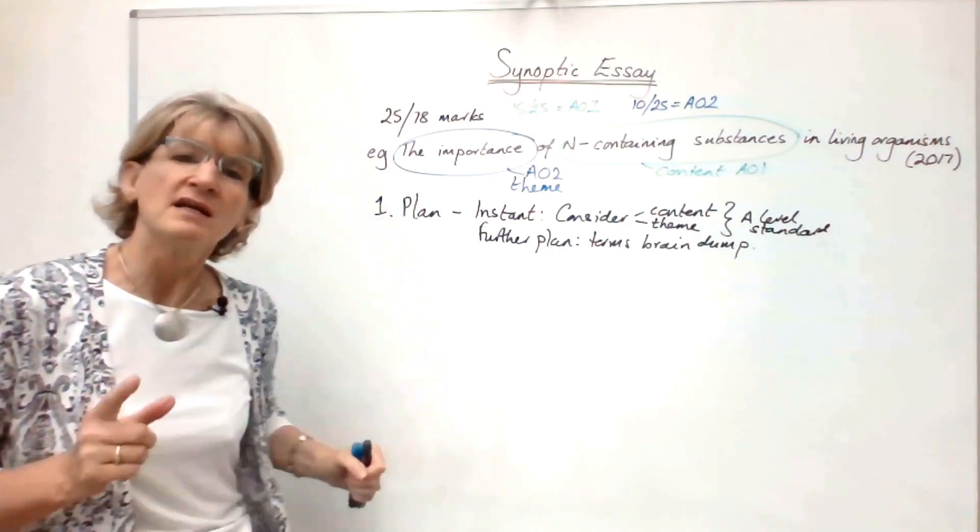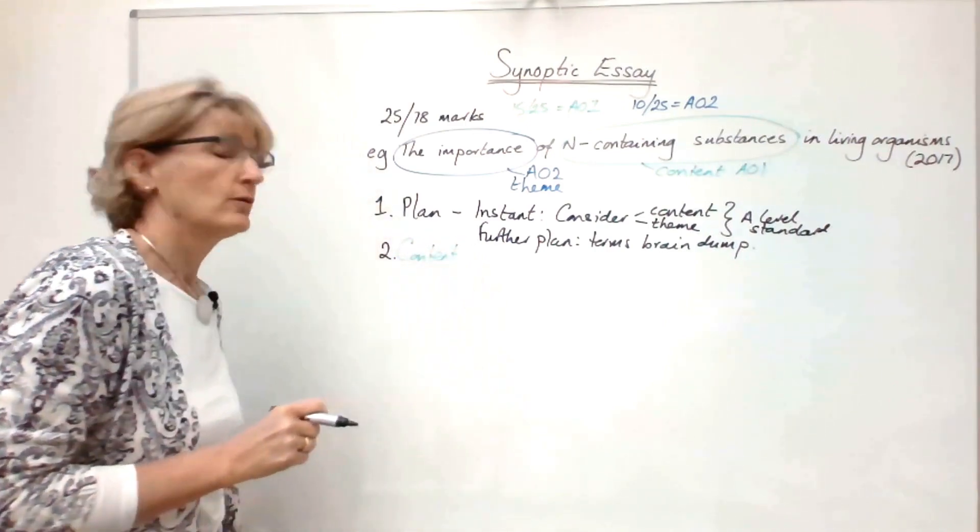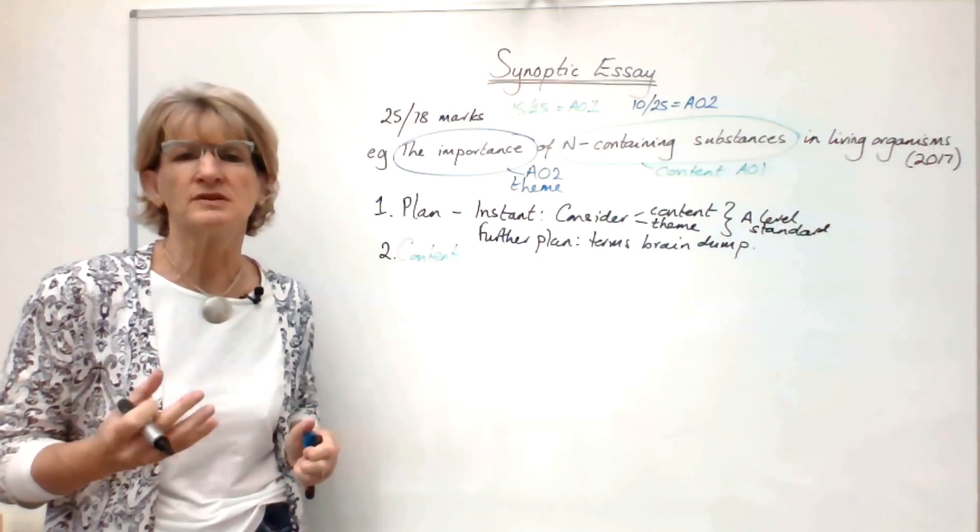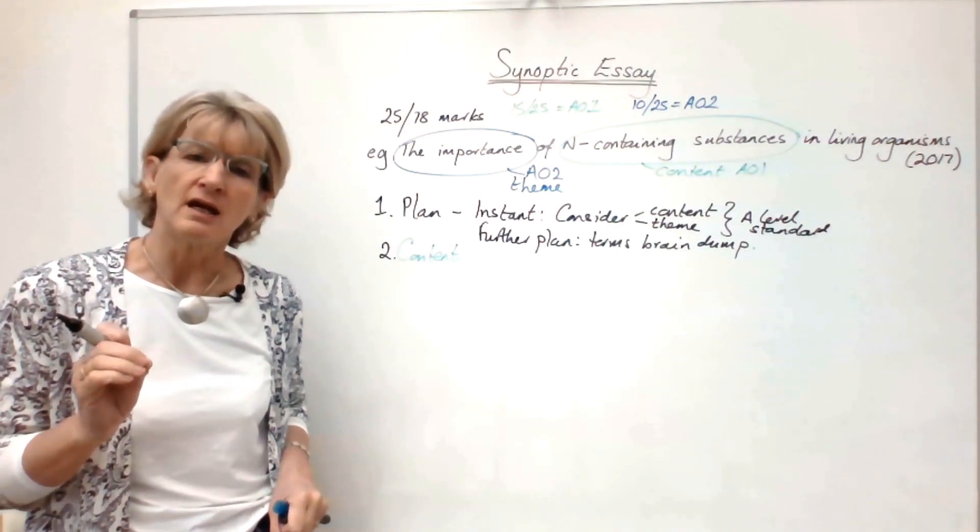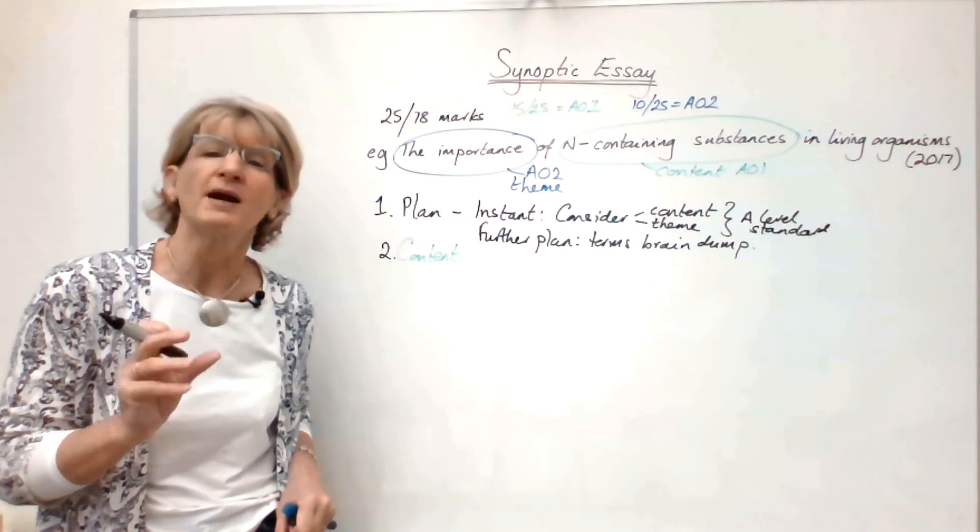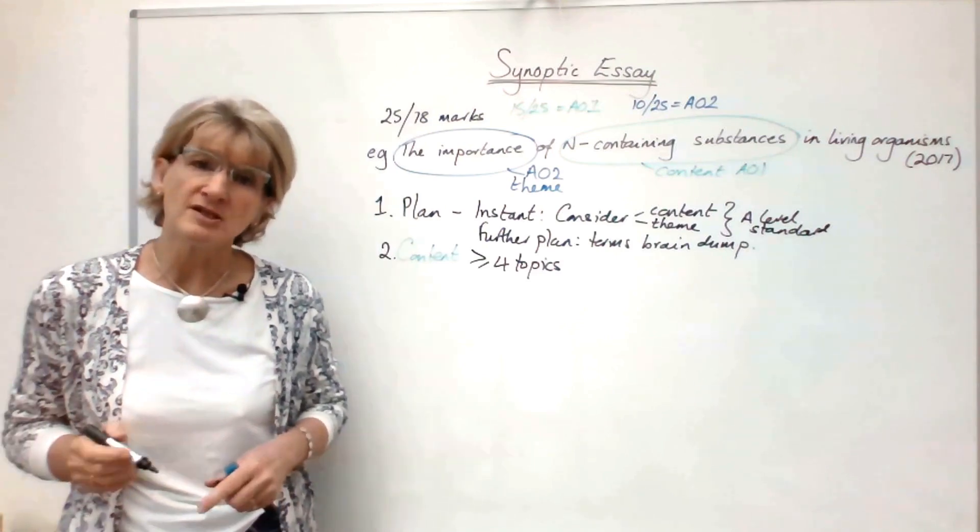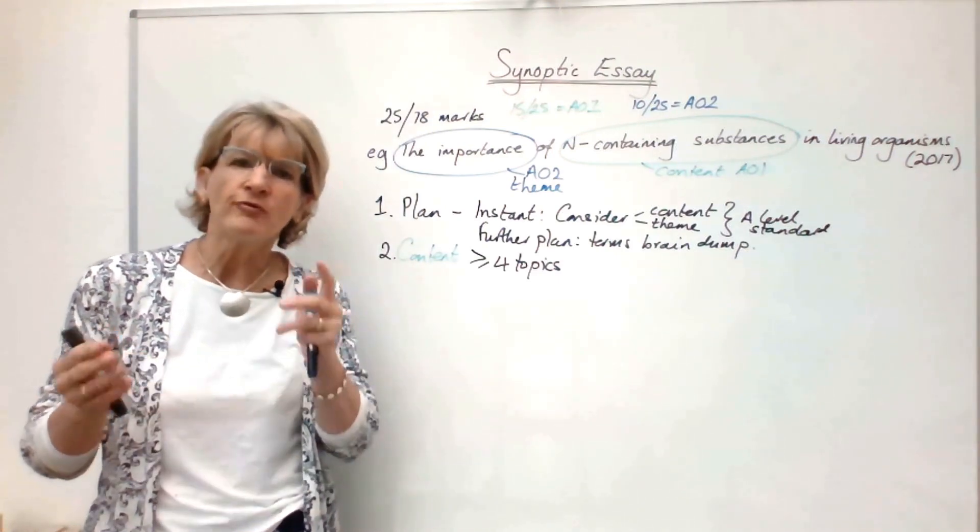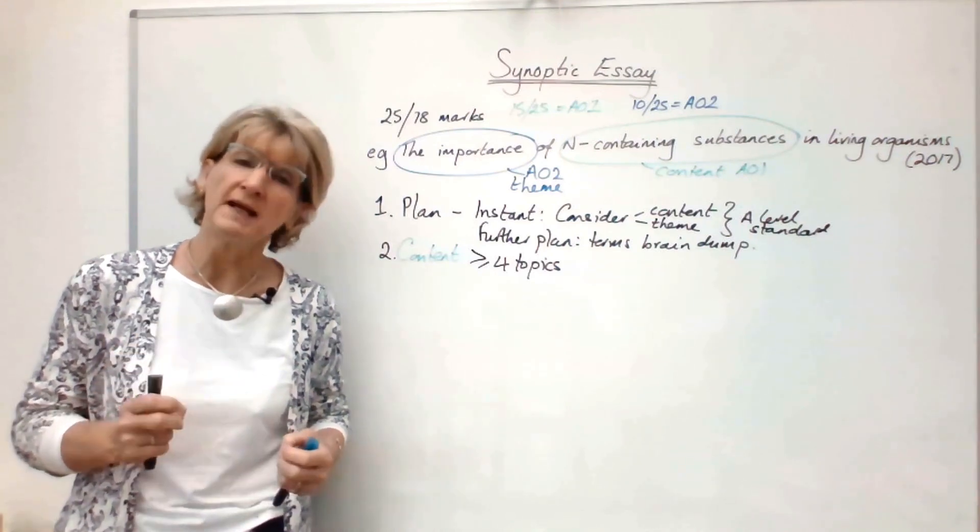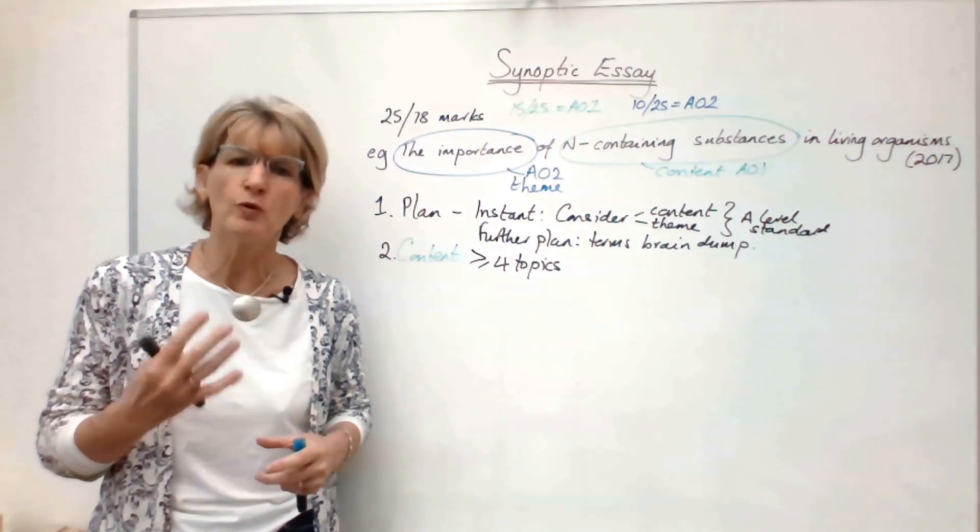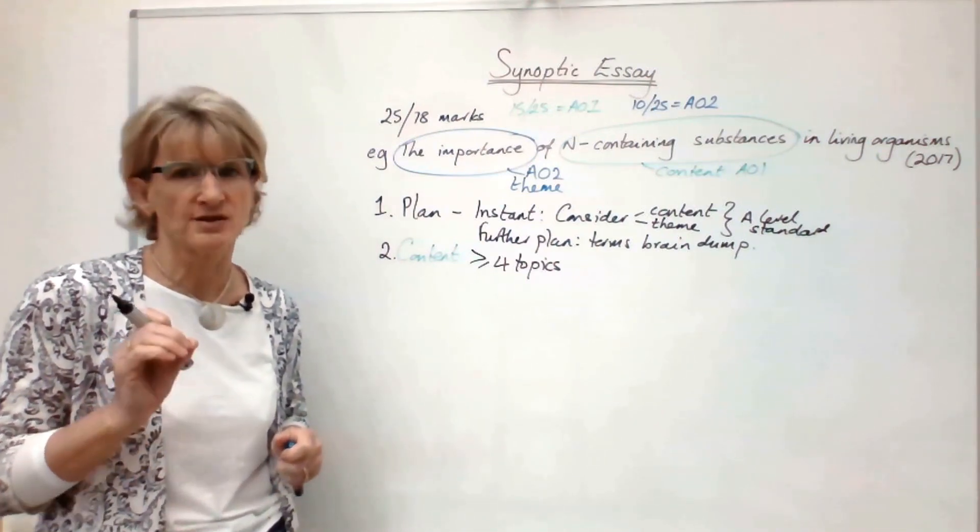The next tip is the content. What are you actually going to write? What examples or topics are you going to include in your content? The key thing here is that you have to allow enough time to write about at least four topics. Personally, I recommend you doing five, and I think that's probably a reasonable balance between the time that you've got and actually having a little bit of insurance because the examiners will pick the best four topics for your mark.